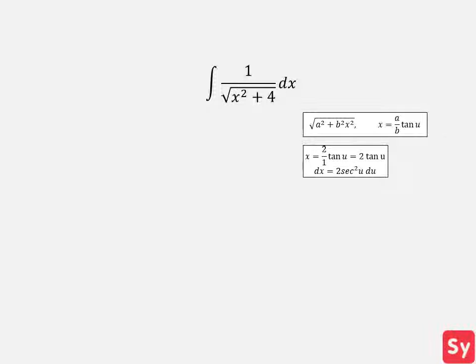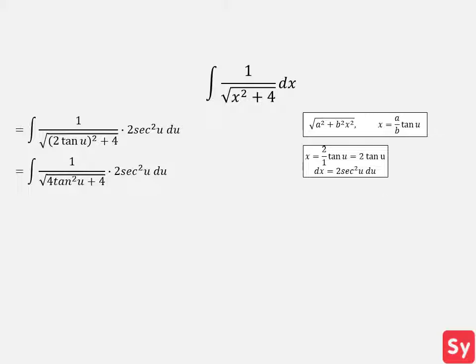So we want to set x equal to 2 times tangent of u, which means dx equals 2 times secant squared of u du. We substitute these values into the integrand. Next, we square 2 times tangent of u.